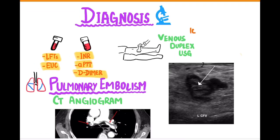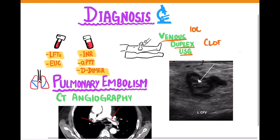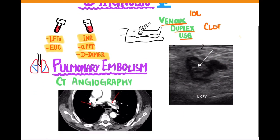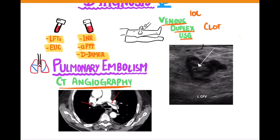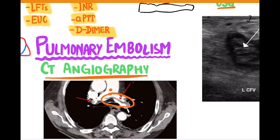The investigation of choice for DVT remains the venous duplex ultrasound scan, which helps us identify the exact location of the clot within the vein. For instance, this is the duplex scan of a clot present in the common femoral vein. You can diagnose a suspected case of pulmonary embolism by doing CT angiography of the pulmonary artery. As you can clearly see in this angiogram, this is the pulmonary artery and this is the embolus present within it.